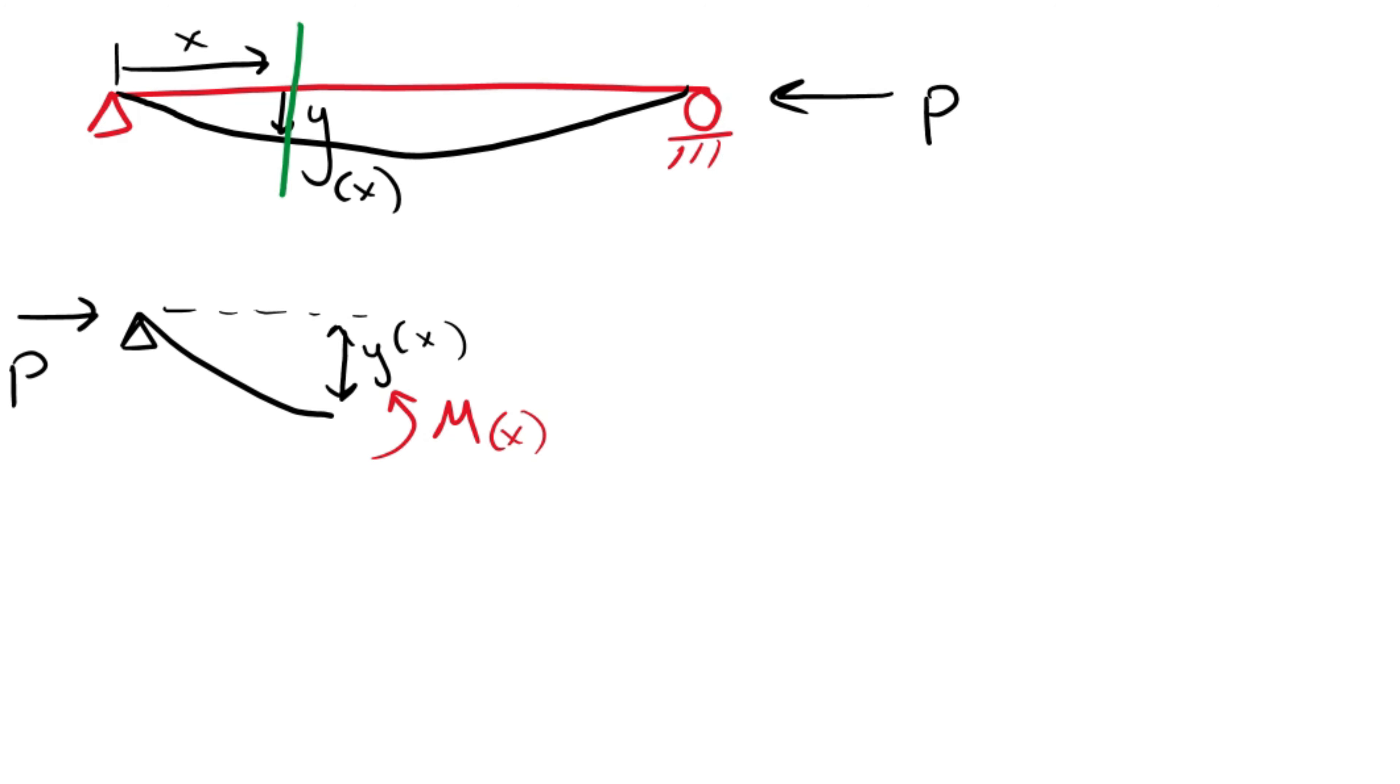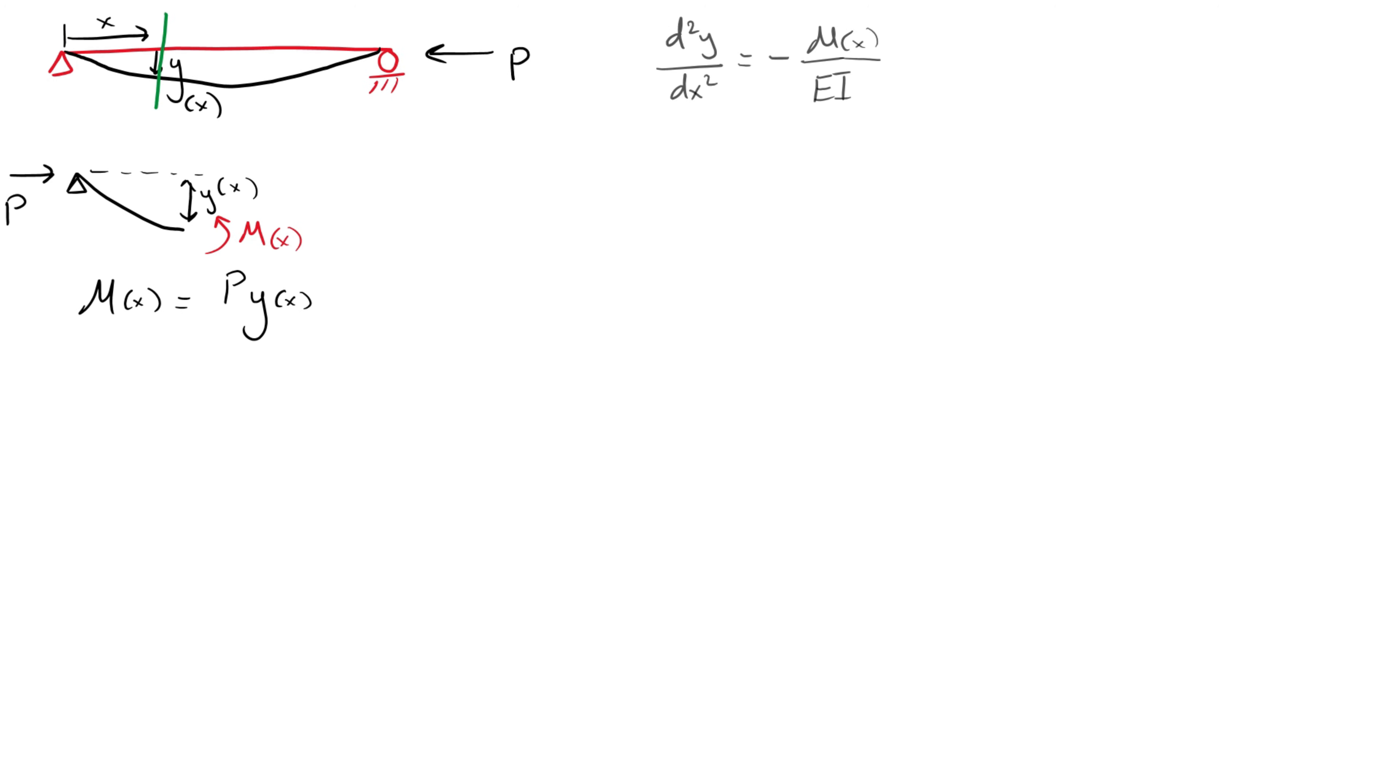Let us first make a cut in the beam at a distance x from the pin support. We can immediately determine that there are no shear forces inside of the beam due to lack of vertical forces, but in the existence of a deflection there will be an internal moment equivalent to the axial load P multiplied by the displacement y.